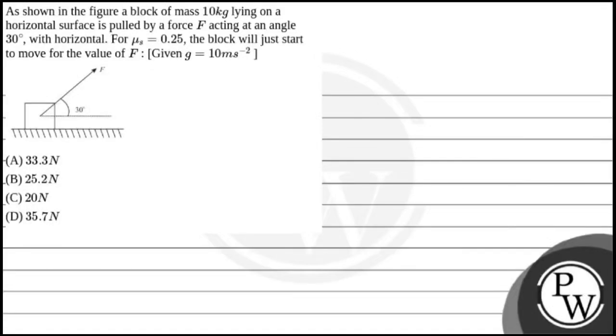Hello, let's read this question. As shown in the figure, a block of mass 10 kg laying on a horizontal surface is pulled by a force acting at an angle 30 degrees with horizontal. For μ = 0.25, the block will just start to move for the value of F, given g = 10 m/s².